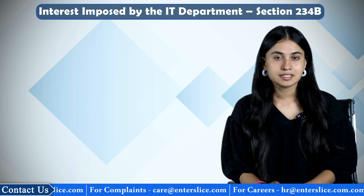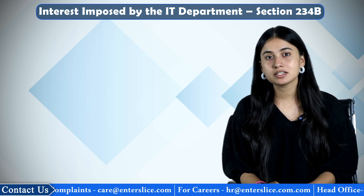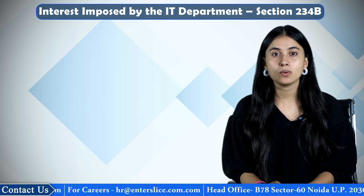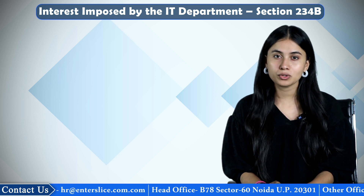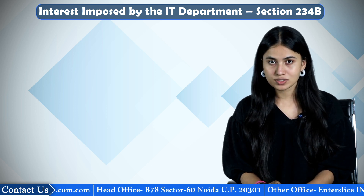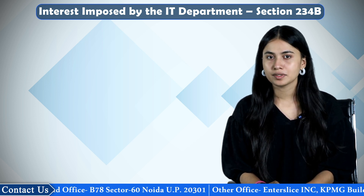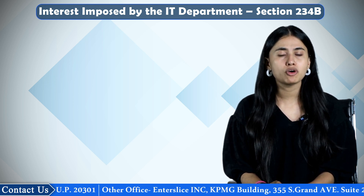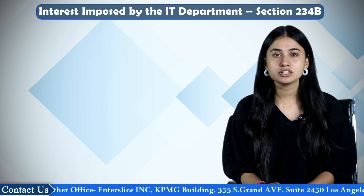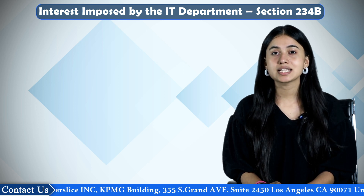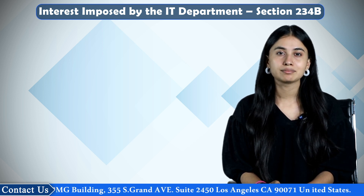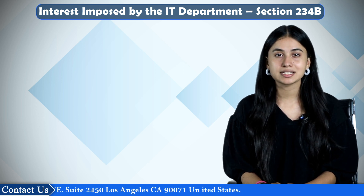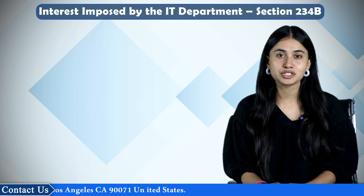According to the Indian Income Tax Act, taxpayers fall under the surveillance of Section 234, which requires taxpayers to pay all kinds of taxes within or on time. When such obligation is missed for any reason, partially or completely, the taxpayers are penalized in the form of interest. One such interest is defined under Section 234B of the Act, which comes into play when a taxpayer fails to pay their advance taxes, either partially or completely.